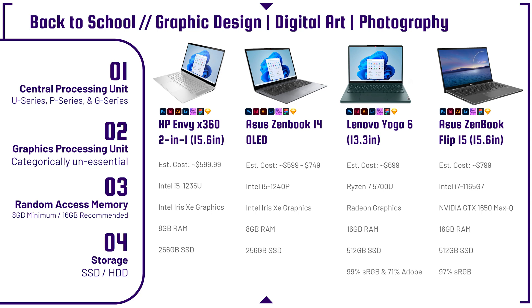For the CPU, you want to look for a U-series, P-series, or G-series processor above the i5 level. Examples include the i5-1235U or i5-1240P from Intel. In the Ryzen category, look for something like the Ryzen 5 6600U or Ryzen 7 6800U, or even last year's Ryzen 5700U. For graphic design, digital art, and photography, there's not a big difference between Ryzen 5000 and 6000 generations, so you could save money by not getting the latest generation unless you're doing video editing.